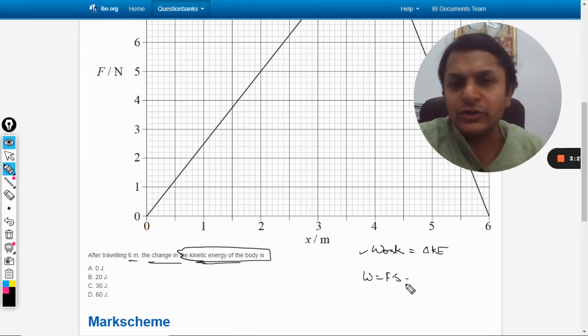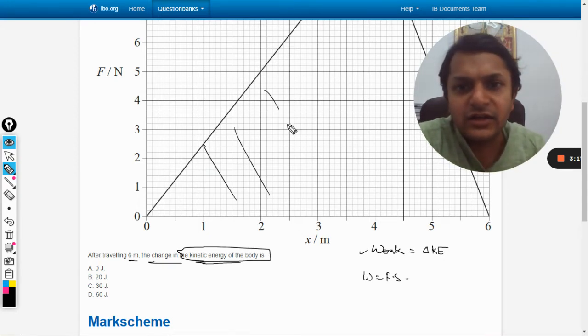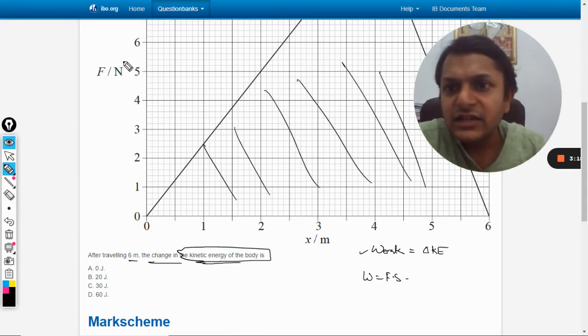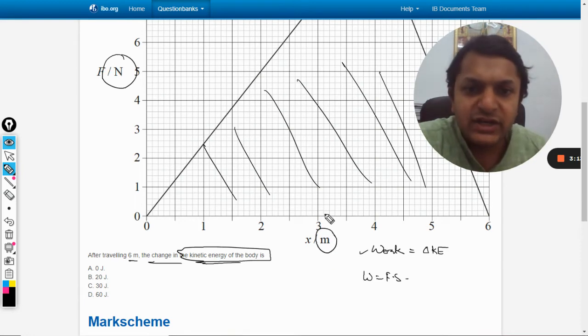As I have told you earlier also in many questions, whenever there is a graph given, always concentrate on the SI units of the area under the curve. Now if I find the area under the curve, like this area complete, this will be the newton and this is meter, so the unit here will be newton meter, which is joule.